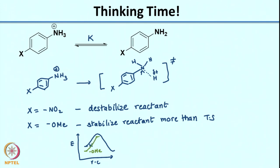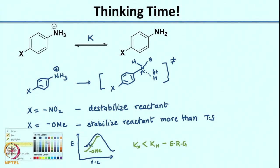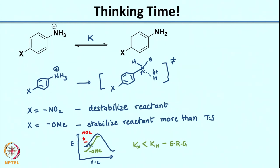For an electron-releasing group you end up with a greater activation energy barrier, so k_X is less than k_H. Whereas for an electron-withdrawing group, the reactant is destabilized — its energy has increased — and the corresponding increase in transition state energy is not as much. So what you have is a decrease in activation energy, meaning k_X is actually greater than k_H when you have an electron-withdrawing group.